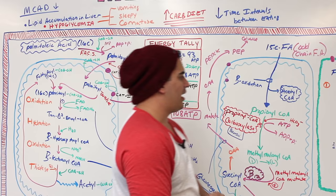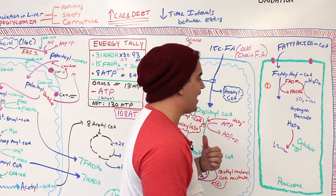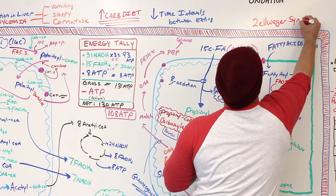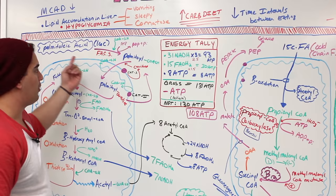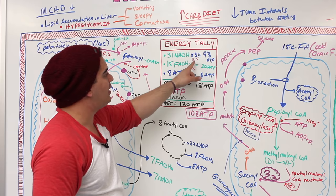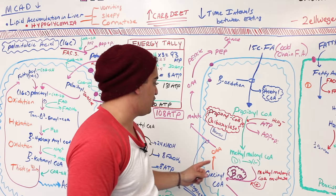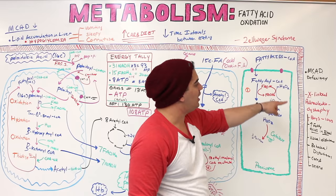One final disorder is Zellweger syndrome, in which a person cannot make functional peroxisomes, causing multiple disastrous effects on the body beyond just fatty acid oxidation. To summarize this video: we reviewed beta-oxidation and energy tally (130 ATP rounded, or ~108 ATP with precise values), discussed odd-chain fatty acid oxidation and succinyl-CoA metabolism, differences in peroxisomal beta-oxidation, and three disorders: MCAD deficiency, X-linked adrenoleukodystrophy, and Zellweger syndrome.